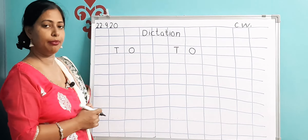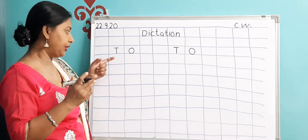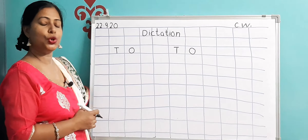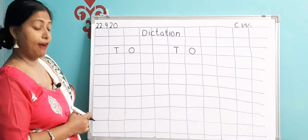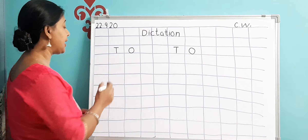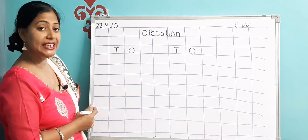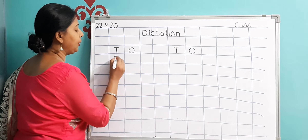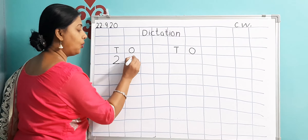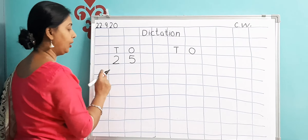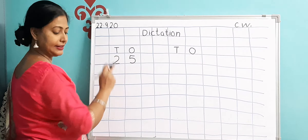Now I will say the numbers and you have to write them — you can do along with me. Whatever number I say, you will write below in these columns. So the first number you have to write is number 25. How do you write 25? I said 25 — that means 20 you will write under the Tens column and 5 under the Ones column.